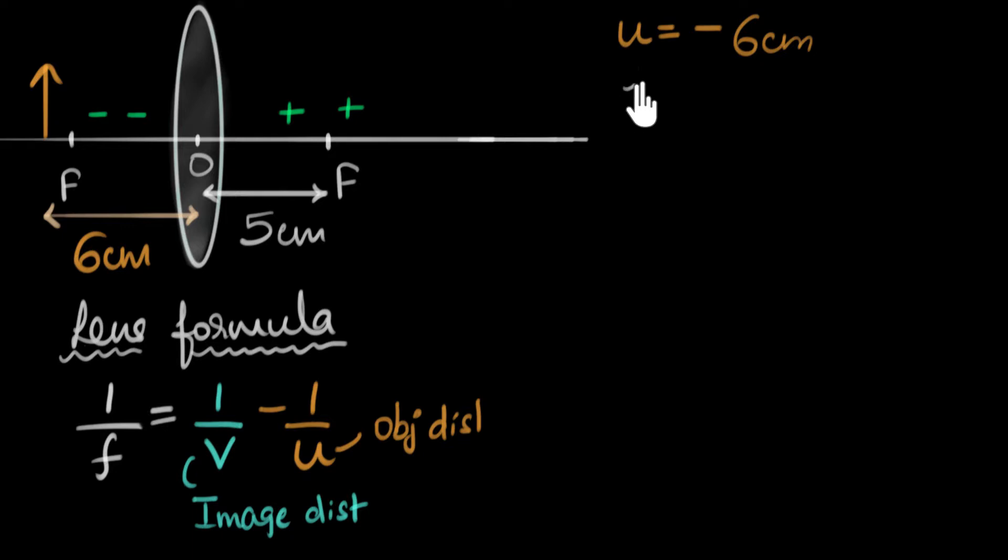What about the focal length? And here we need to be careful, because for lenses, notice we have a focus on this side, and we have a focus on this side. One is a positive, the other one is a negative. Which focus are we going to choose?